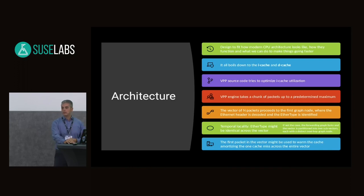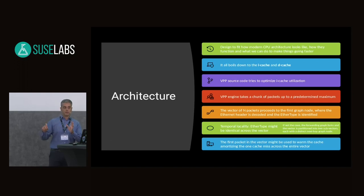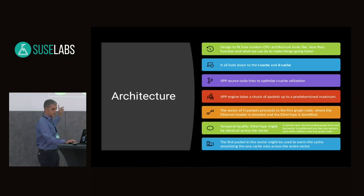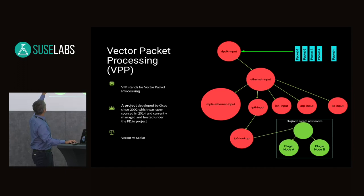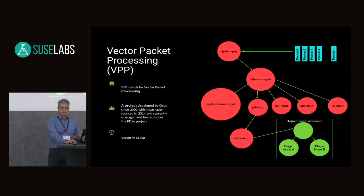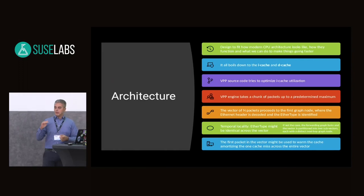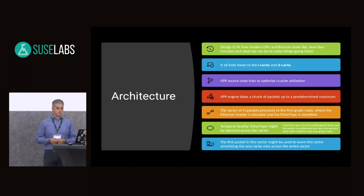The only packet that creates cache misses is the first packet you process in the vector, which warms up the cache. The extra cost for the first packet is amortized over all the packets in the vector. This still works even in scenarios where you get a mismatched packet in a vector — for example, an IPv6 packet in an otherwise IPv4 vector. In that case the vector is split and they follow two different paths, such as the IPv4 node and the IPv6 node. Even then the cost is very low because the next vector you process is much bigger, and the cache warm-up cost is again amortized over more packets. It's a very smart way to deal with iCache misses.